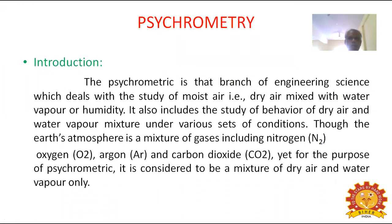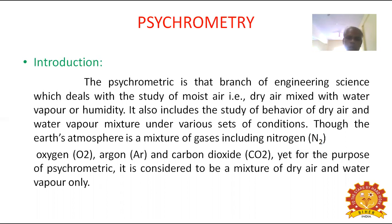Introduction to psychrometry: Psychrometry is that branch of engineering science which deals with the study of moist air, that is dry air mixed with water vapour or humidity. It also includes the study of behaviour of dry air and water vapour mixture under varied sets of conditions. Though the earth's atmosphere is a mixture of gases including nitrogen, oxygen, argon and carbon dioxide, it is, for the purpose of psychrometry, considered to be a mixture of dry air and water vapour only.